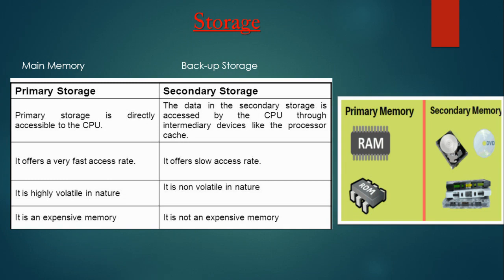Coming towards secondary storage: the data in secondary storage is accessed by the computer through intermediary devices like the processor cache. Cache is a type of storage portion where you feed the information. Secondary storage offers a low access rate — saving, reloading, and buffering all these functions take place in backup storage, which is why it is a bit slower than main memory. It is non-volatile in nature, meaning data remains safe when the electricity is switched off. It is not an expensive memory.